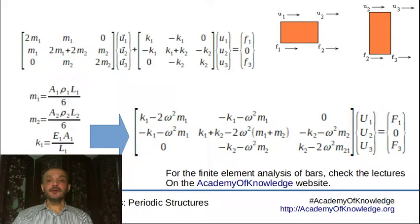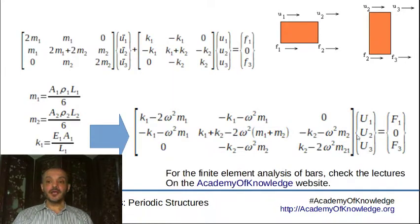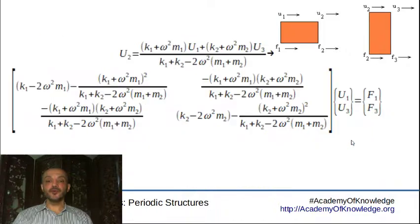Now we will take these equations and use what we did in the spring mass system by removing the second equation. Since the equation corresponding to u2 has zero right-hand side, we can basically move u1 and u3 to the right-hand side and solve for u2, which gives us this expression.